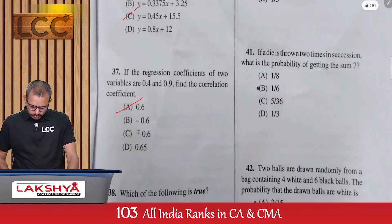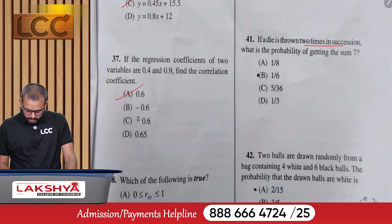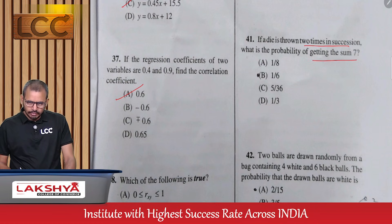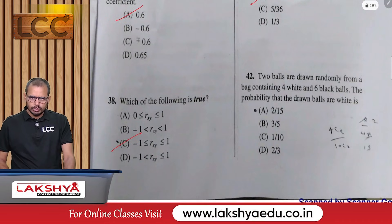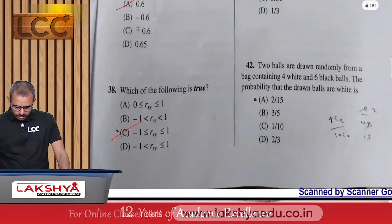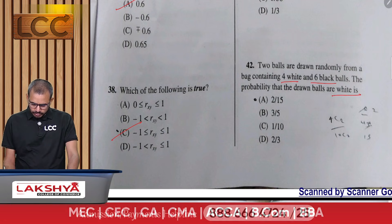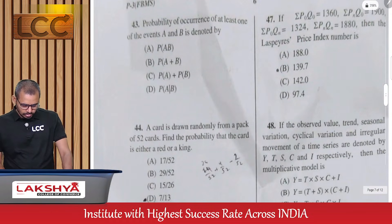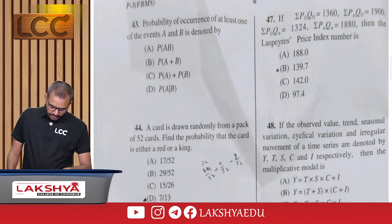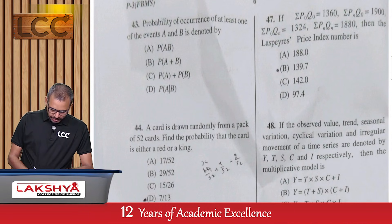Question 41: A die is thrown two times. Find the probability that the sum is 7 — option B. Question 42: Two balls are drawn from a bag containing 4 white and 6 black balls. Find the probability that both drawn balls are white — option A (2/15). Question 43: Probability of at least one of events A or B occurring equals P(A ∪ B) — option B.